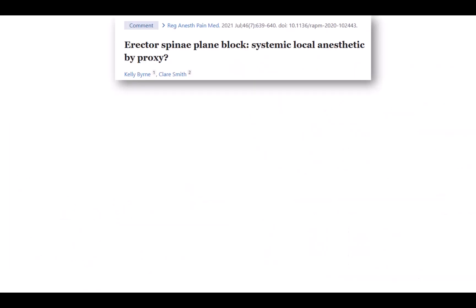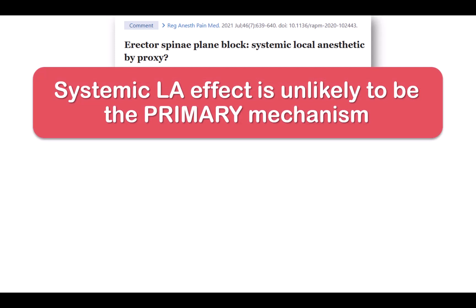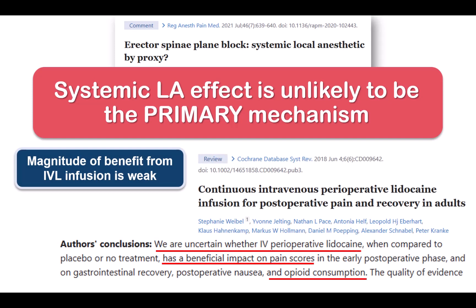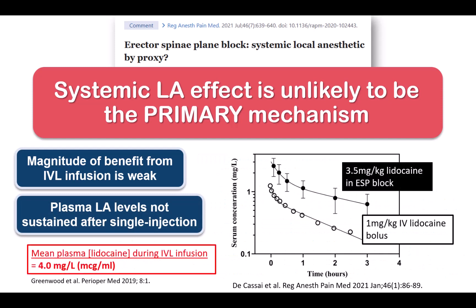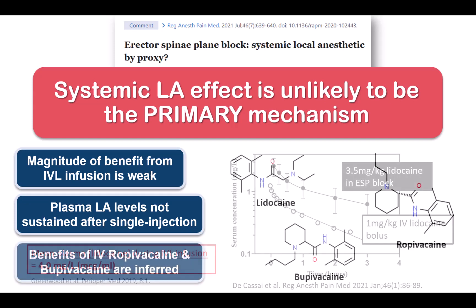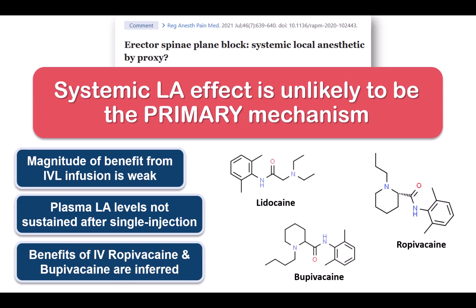The other disparaging comment one usually hears about ESP blocks is that it's basically a proxy for intravenous administration of local anesthetic. I don't think that this can be the primary mechanism for the clinical effects we see. Evidence for a large effect of intravenous lidocaine infusion is somewhat weak. It's not clear that peak lidocaine concentrations after a bolus reach the levels associated with intravenous lidocaine infusion, and they certainly do not remain there — so it doesn't explain the effects we see with single injection ESP blocks. Additionally, similar analgesic effects for intravenous ropivacaine and bupivacaine have never been tested, merely inferred.